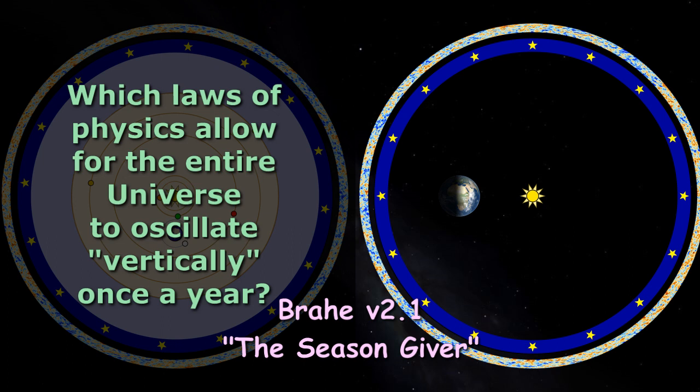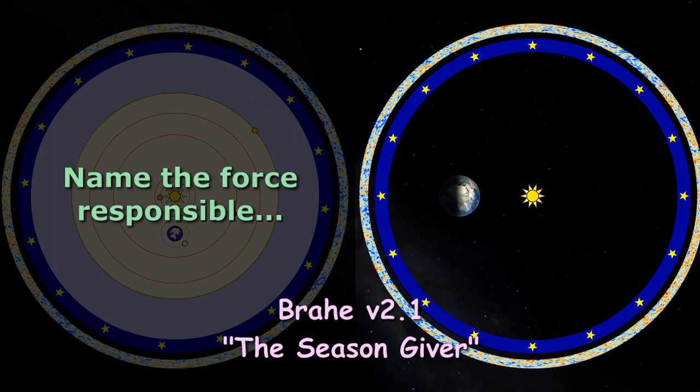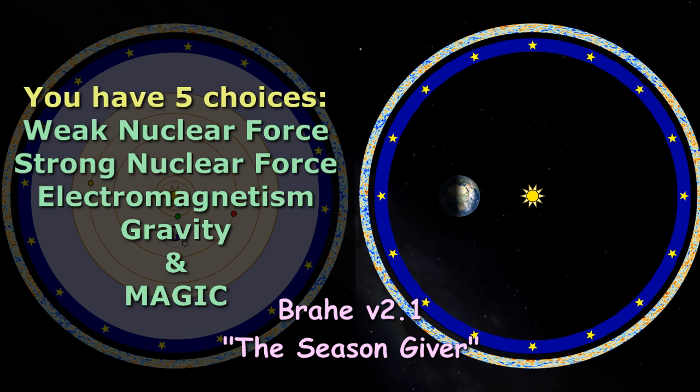Despite his usual affinity for quote mining to supposedly provide support for his batshit claims, Sungenis appears to be unable to draw on any external support for this one, despite claiming that there are unnamed geocentric scientists, positing something he amusingly calls consensus geocentrism. Here's a quick heads up as to which laws of physics allow for the entire universe to move up and down once a year.